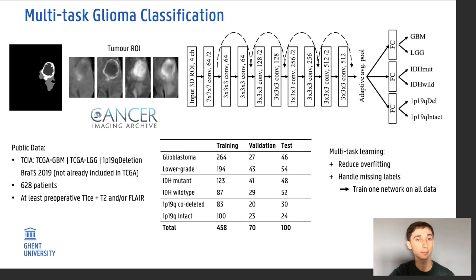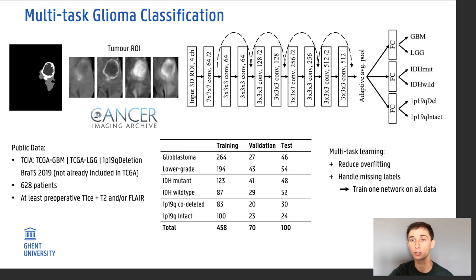After segmentation, we used the obtained segmentation map to extract a square tumour region of interest, which is then fed into the multi-task classification network. This is a residual architecture with nine convolutional layers followed by an adaptive average pool and three fully connected layers — one for each task. The adaptive average pool allows processing of any input ROI size.